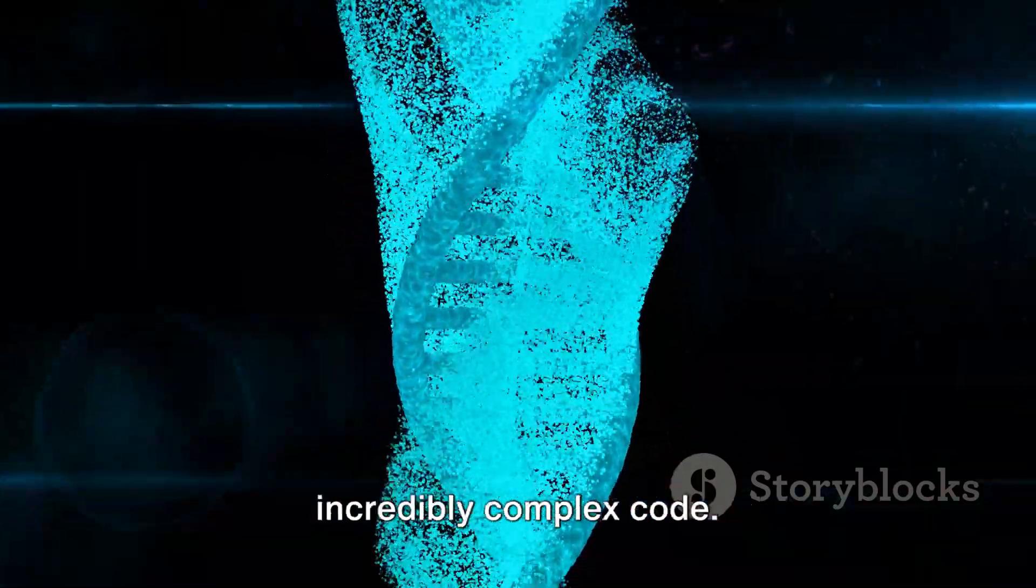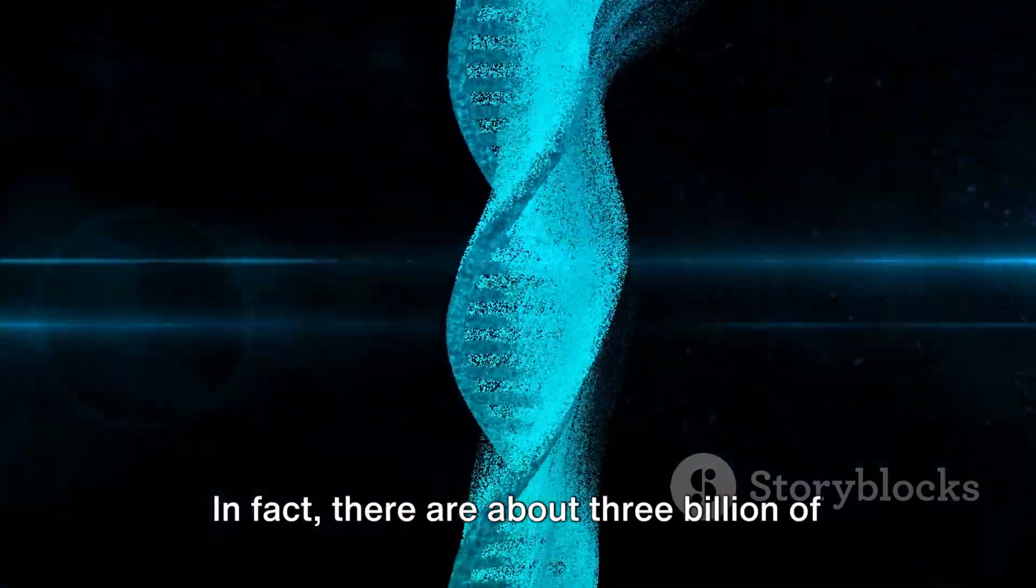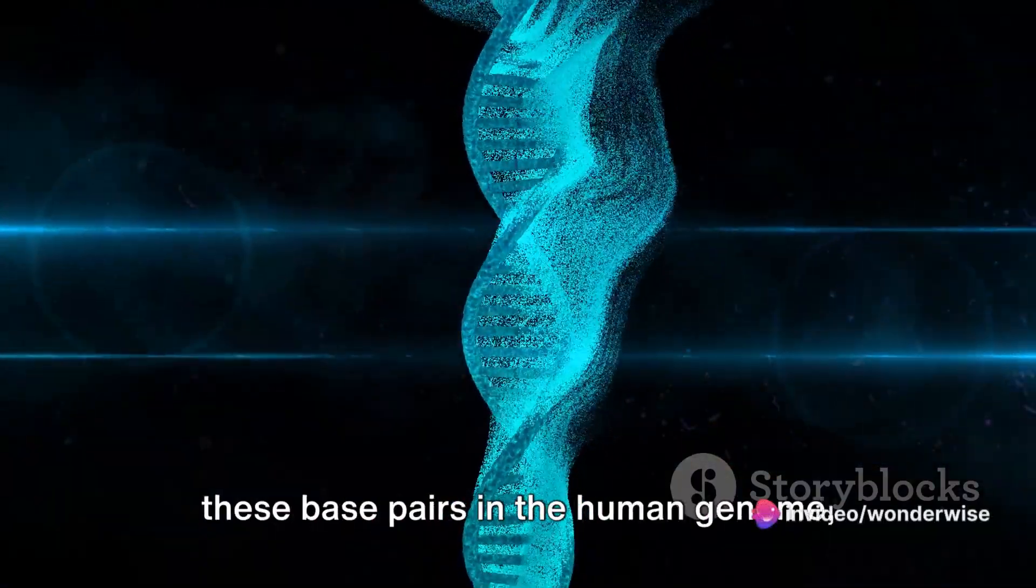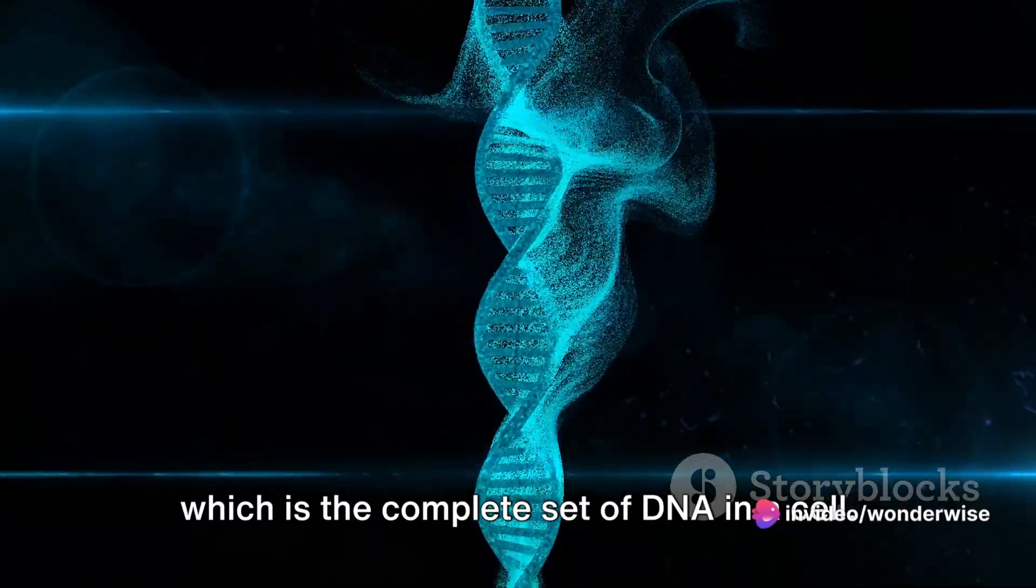These pairs are like the letters of an incredibly complex code. In fact, there are about 3 billion of these base pairs in the human genome, which is the complete set of DNA in a cell.